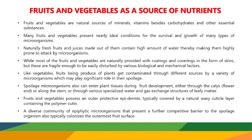While most fruits and vegetables are provided with a coating and covering in the form of skin — every fruit and every vegetable has skin as the outermost layer, which acts as a protective covering that is naturally present in them. But these are very fragile; they are not very strong. They are fragile enough to be disturbed by various biological and mechanical factors. So fruits and vegetables also get contaminated through different sources by a variety of microorganisms, which may play a significant role in their spoilage.